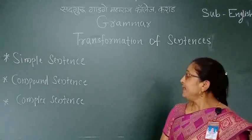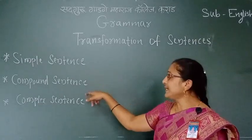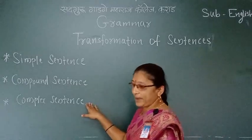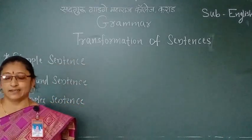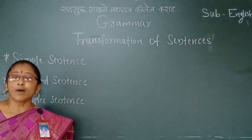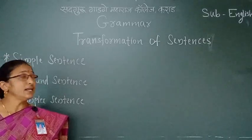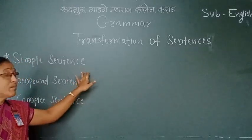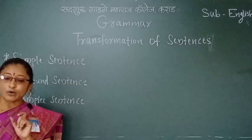There are three main types of sentences: simple sentence, compound sentence, and complex sentence. A sentence which has only one subject and predicate is called a simple sentence. In a simple sentence, there is only one main clause.